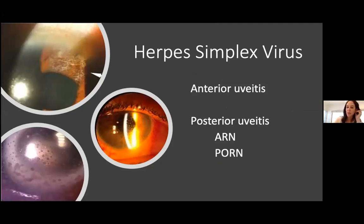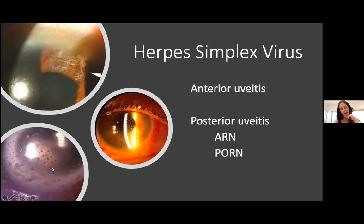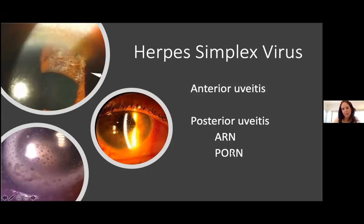HSV can cause anterior uveitis — fairly common, generally non-granulomatous with fine stellate KPs — but the hallmark is very high intraocular pressure, causing corneal endothelial dysfunction, making the cornea edematous and opaque. A complication is sectoral iris atrophy. Posterior uveitis caused by HSV includes acute retinal necrosis (ARN) and progressive outer retinal necrosis (PORN), which we'll come to.